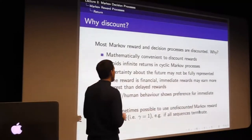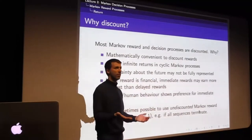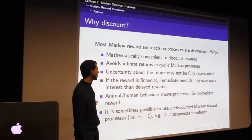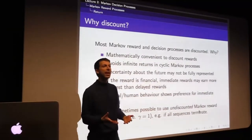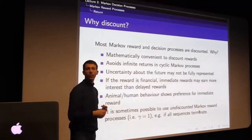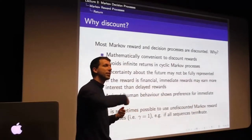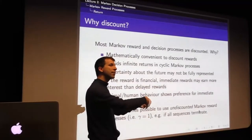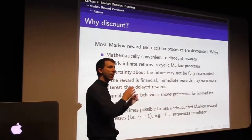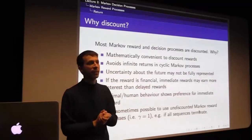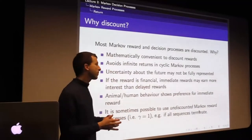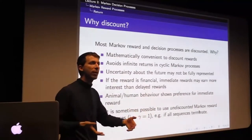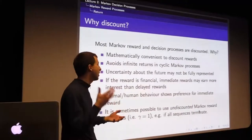If you don't agree with discounting, there are alternatives. For undiscounted Markov reward processes, the simplest case is when all sequences terminate - like in our student MRP, all sequences end up falling asleep. If all sequences end in an absorbing terminal state that yields zero reward, then all returns are finite by definition. There's also an average reward formulation in the extended notes that handles even infinite sequences without discounting.